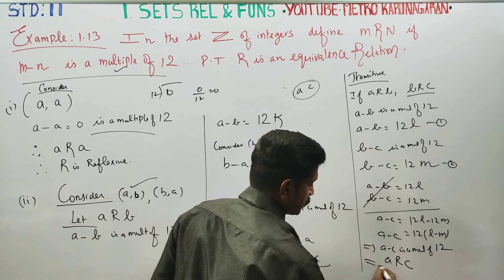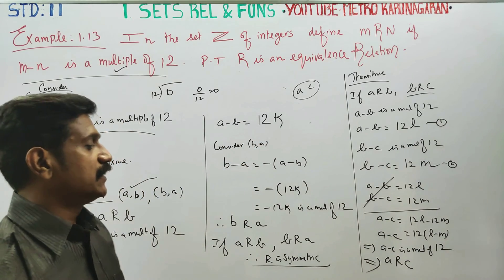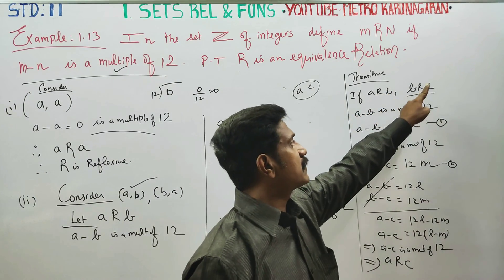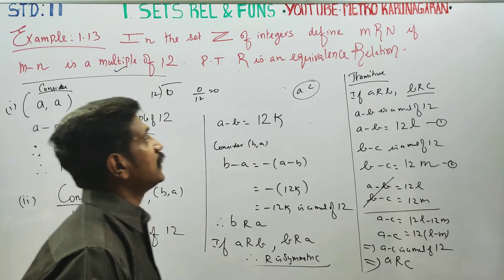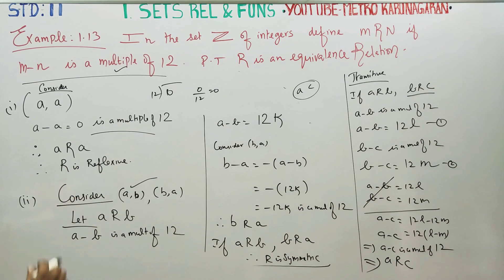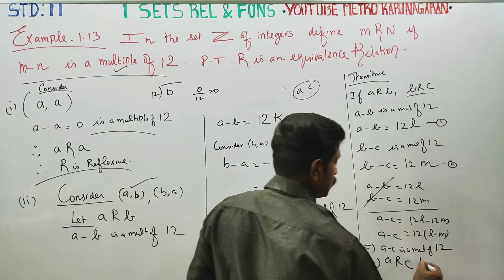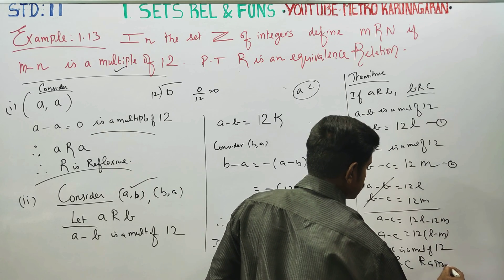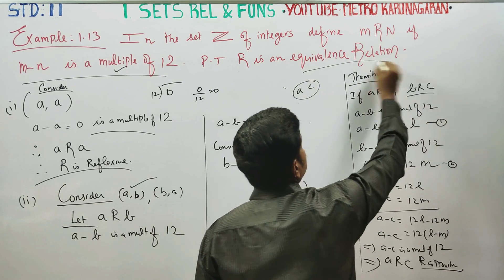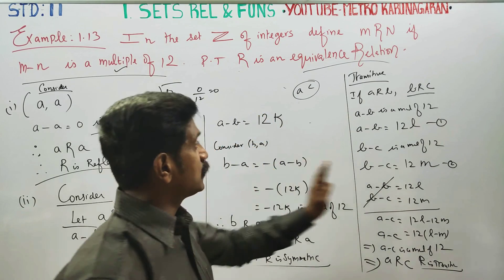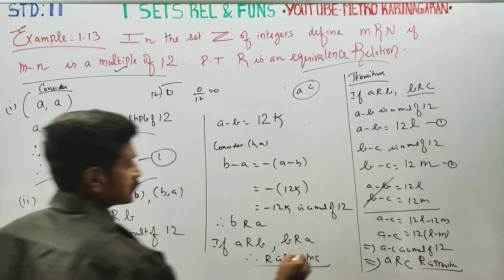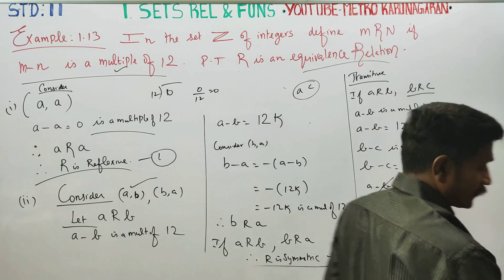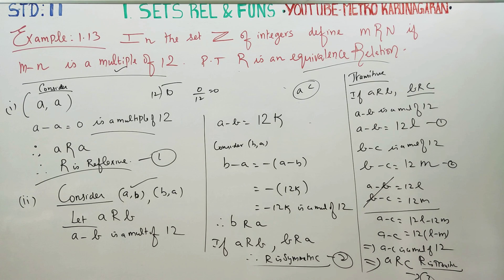A is related to c. We started with a is related to b and b is related to c, and we have proved a is related to c. Therefore R is transitive. All three exams are passed — reflexive, symmetric, and transitive. Therefore, from 1, 2, and 3, R is an equivalence relation. Thank you.